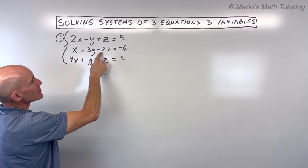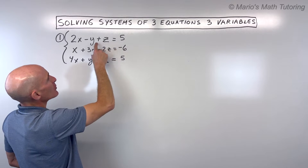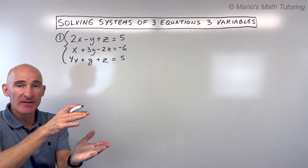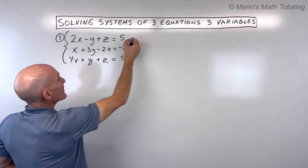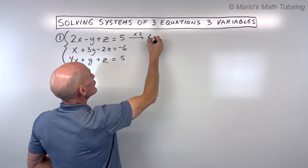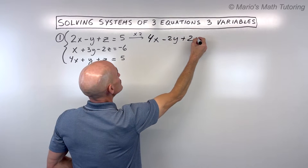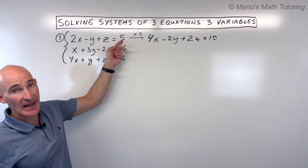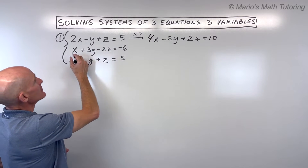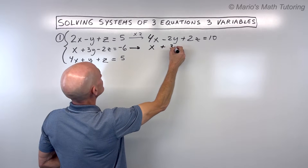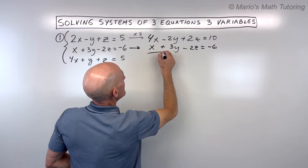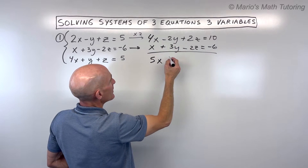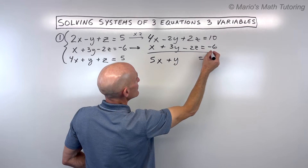Notice how we have one z here and negative two z here. I'm going to take this top equation and multiply the entire thing by two. This way we'll have 2z, and when I add it to this equation with negative 2z, the z's are going to cancel out. That gives us 4x minus 2y plus 2z equals 10. One mistake students sometimes make is they don't multiply both sides — make sure to do it to both sides. Keeping the second equation the same: x plus 3y minus 2z equals negative 6. Adding straight down: the z's cancel, giving us 5x plus y equals 4.